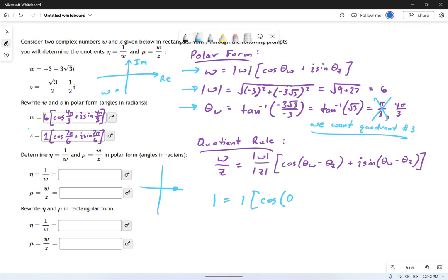Zero degrees, zero radians, however you want to call it, plus I sine of that angle, zero degrees or zero radians. Okay, so this is really what the number one is.